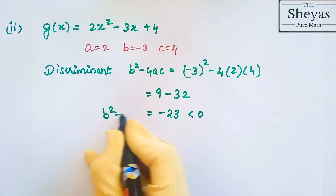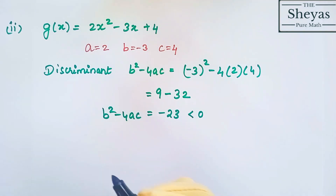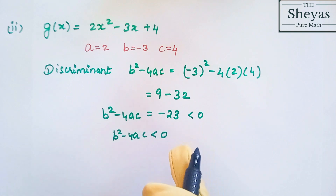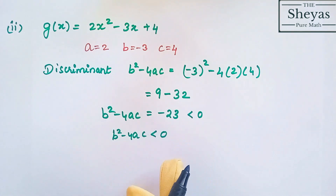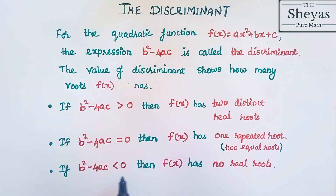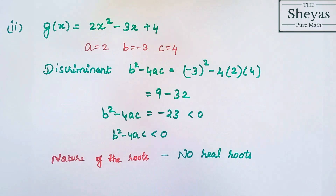Since b squared minus 4ac is less than 0, according to the third condition, we can say that the nature of the roots is that g of x has no real roots.